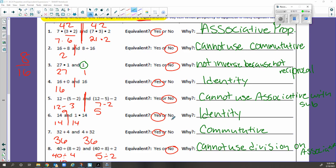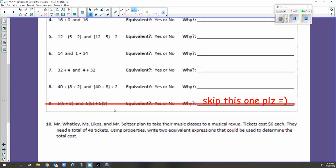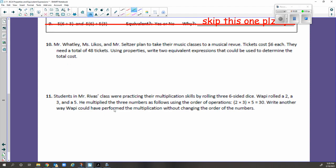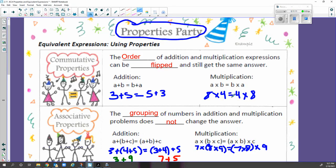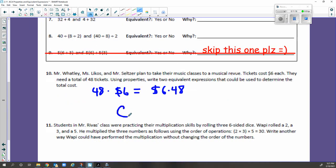Guys, there's two word problems below this and I want to go through those with you. So I'm going to go back to my other page here. This one says, Mr. Watley, Ms. Lycos, and Mr. Seltzer are going to take their music classes to a musical review. Tickets cost $6 each. They need a total of 48 tickets. Using properties, write two equivalent expressions that could be used to determine the total cost. So I think if they have 48 tickets that they need times $6 each, couldn't we do that in a different order? Couldn't we do $6 times 48 kids? I think we can. And I really think that that's because of the commutative property, right? That's the property that we would use. Because remember, commutative property, if I check back at my notes, it's flipping the order of multiplication. So that one would be because of the commutative property. Super cool.